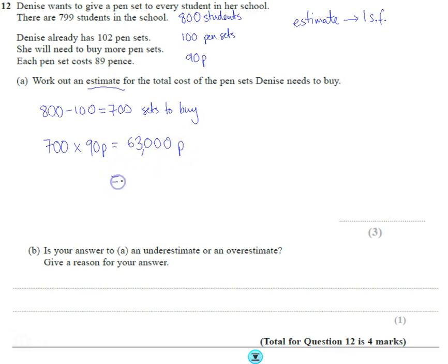Let's turn that into money because it makes more sense. So I'm going to divide by 100. So it's going to be £630. So that's a good estimate. £630.